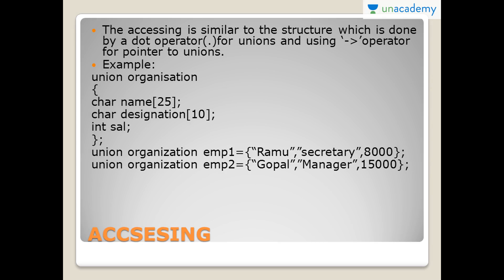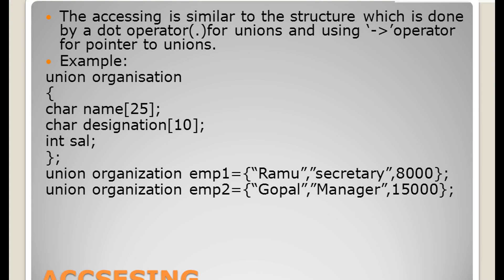Now let's see the accessing of members — whether it's similar or not. Yes, it is also similar. We use a dot operator. For Structures, we use the dot operator by member name to access it. In Unions also, we are using the dot operator. And we also use the arrow operator, which is the operator for pointer to Unions. In Unions also, we have pointers.